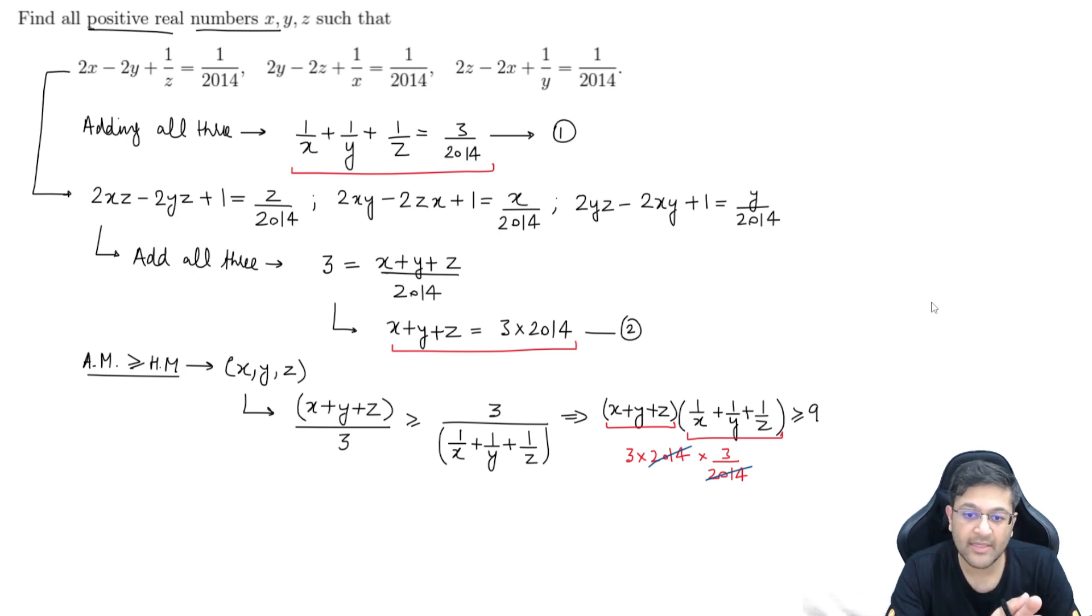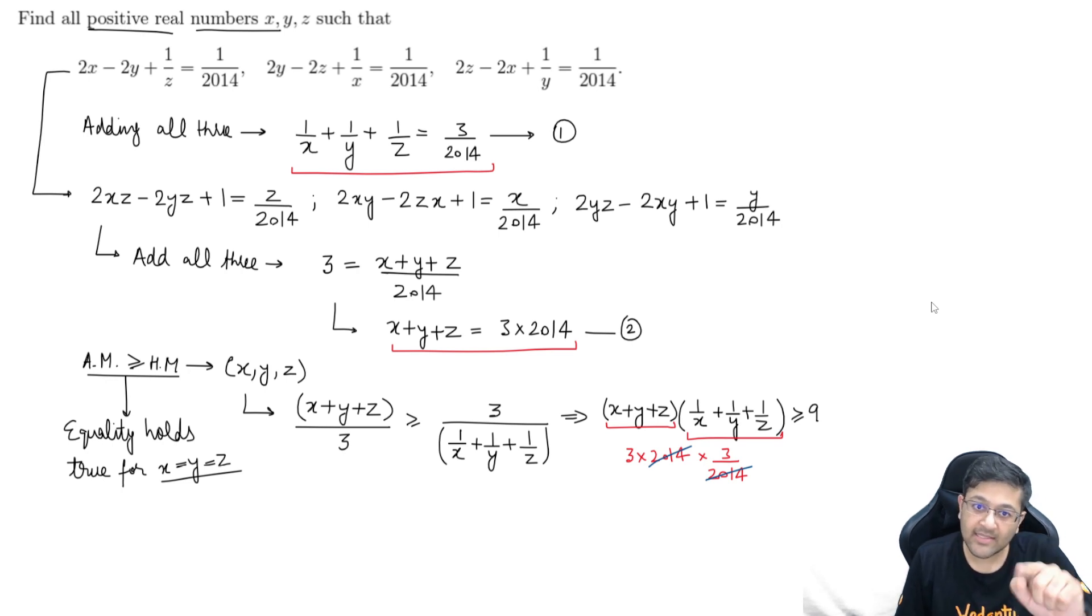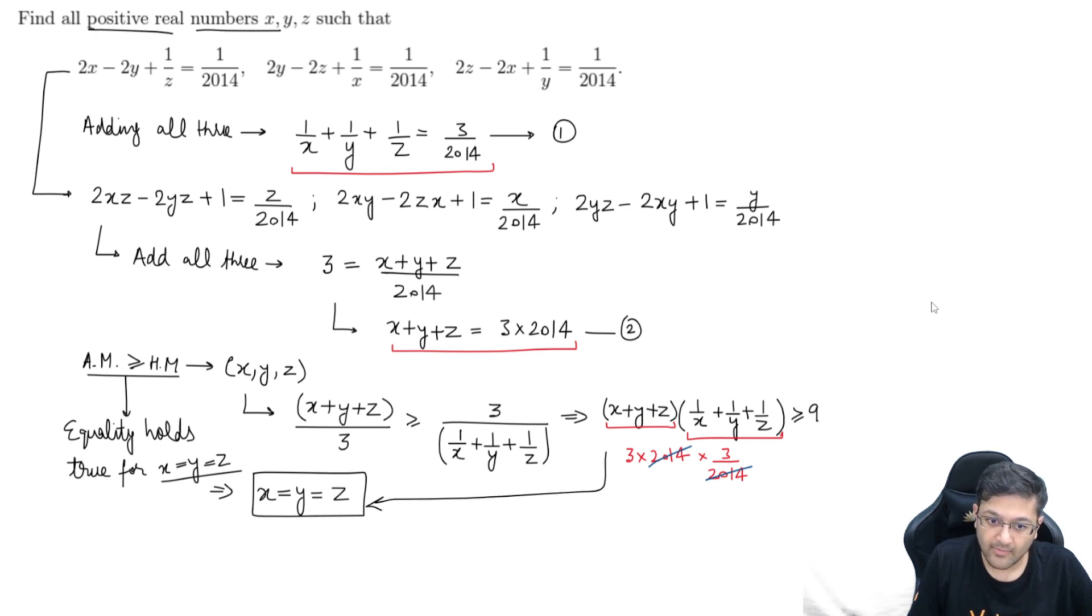Right side pe ke hai tha, from AM greater than equal to HM, we found that the value of the expression is always greater than equal to 9 and it will be equal to 9 in the case of x equal to y equal to z, we know that from AM greater than equal to HM. Equality holds true for x equal to y equal to z, it will hold true in that case and it is coming out to be minimum, the product is 9. That means that x should be equal to y is equal to z is your solution from this thing. That x equal to y equal to z should be your solution since equality is holding true on the left hand side.